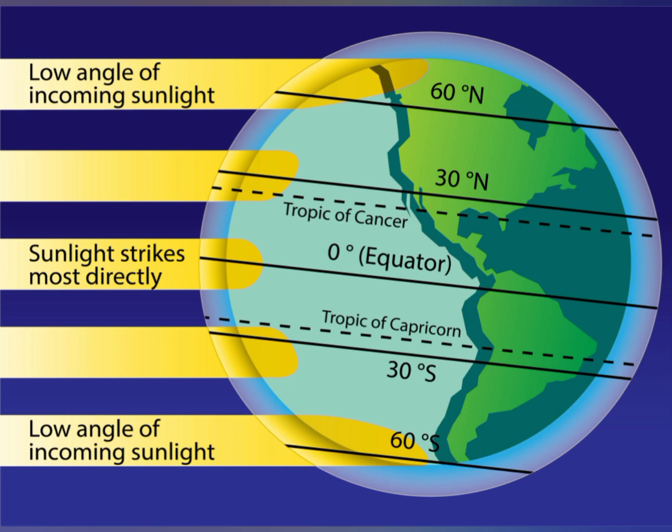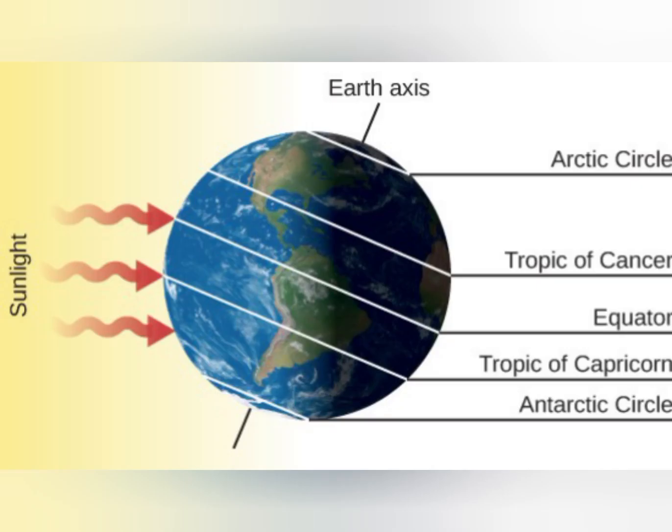As we move towards the temperate regions — between 23 and a half degrees to 66 and a half degrees north and south of the equator — the differences of the seasons are mostly felt. This region experiences four seasons, each lasting about three months. In the northern hemisphere, December to February is winter, March to May is spring, June to August is summer, and September to November is autumn. This variation in seasons is very useful for the growing and ripening of certain crops.